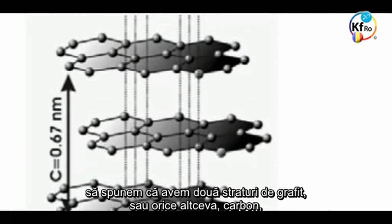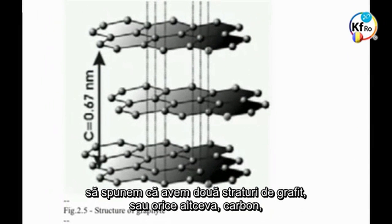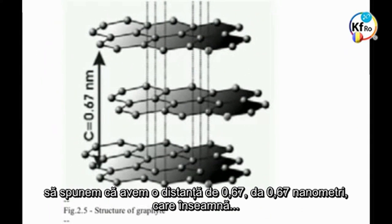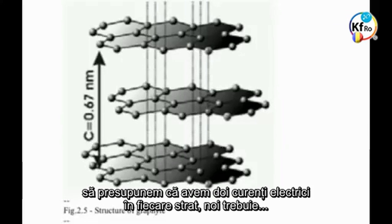Coming back to Figure 2.5, if we have two layers of graphene with a distance of 0.67 nanometers, that means we supposedly have two electric currents in each layer.